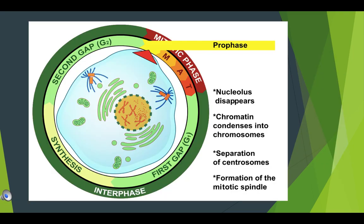Let us recapitulate what actually happens in prophase. Centrioles start moving apart and reach opposite poles. Chromosomes become distinct — they are already duplicated as paired chromatids. Sister chromatids attach to each other at a small region called the centromere. Spindle fibers appear between daughter centrioles, forming the achromatic spindle. The nuclear membrane and nucleolus disappear.